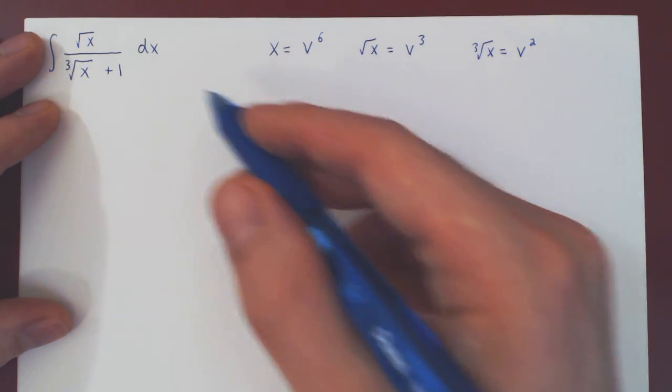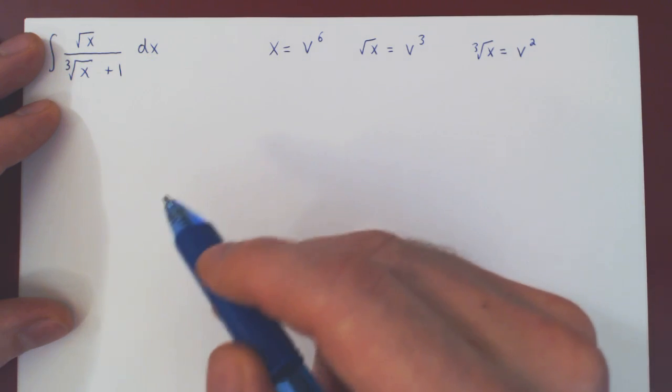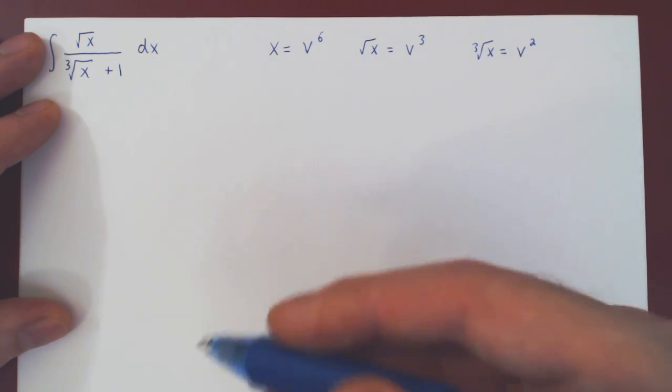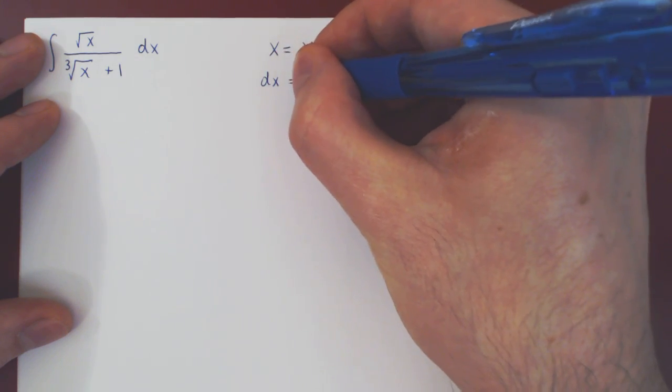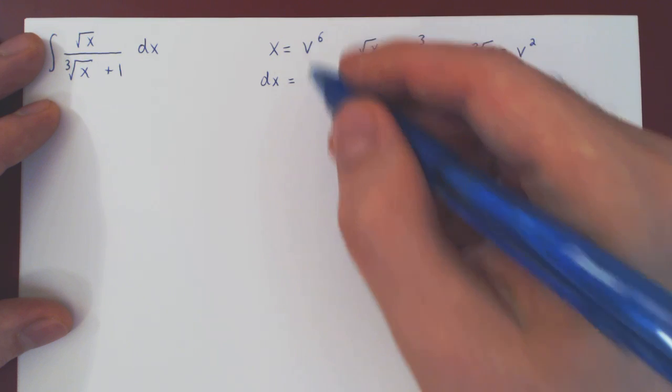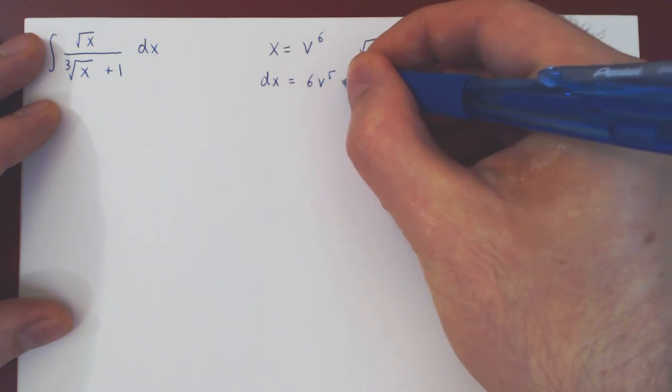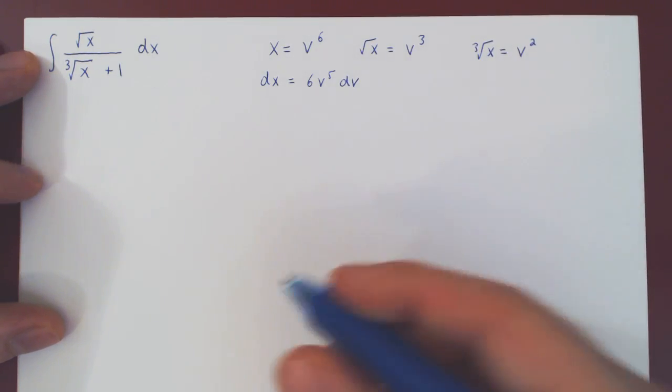The only thing we're missing now is our dx. Well, x equals v to the 6. Both are equal as functions of x and v, so they have the same differential. So dx, the differential of x, will be the differential of v to the 6, which is 6 v to the 5 times dv. And now we have all the pieces, so let's replace.